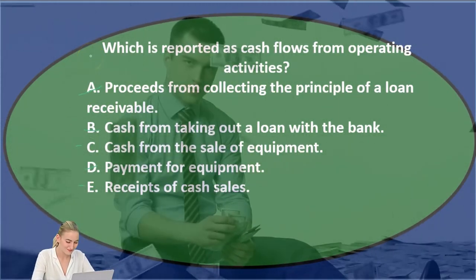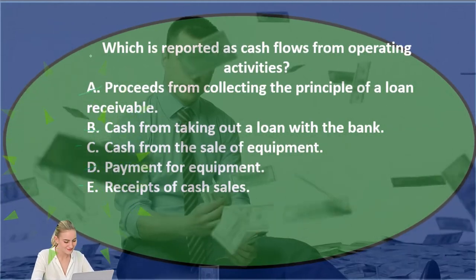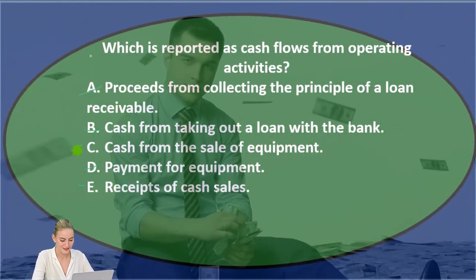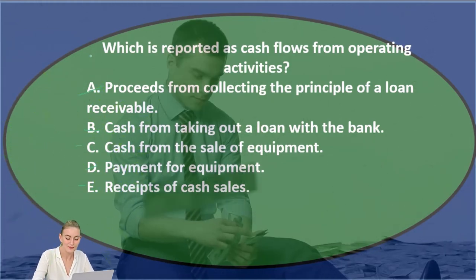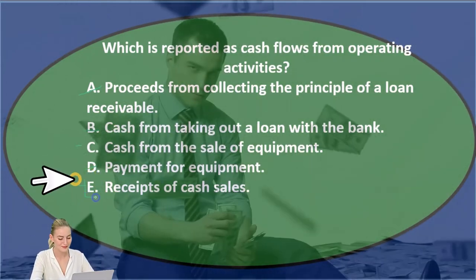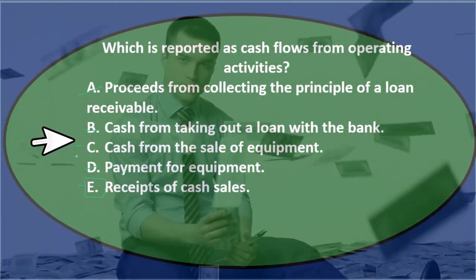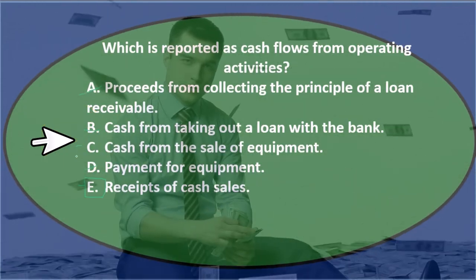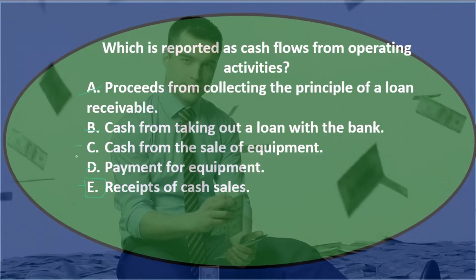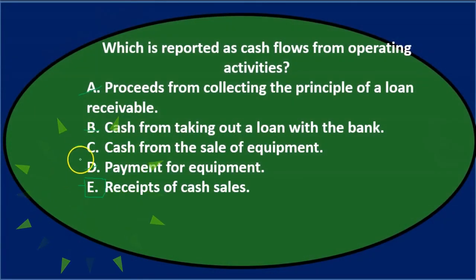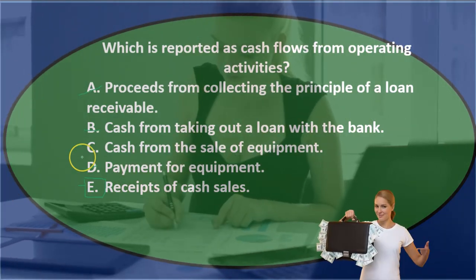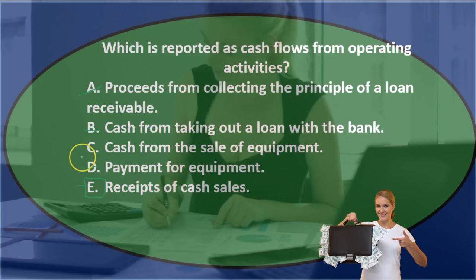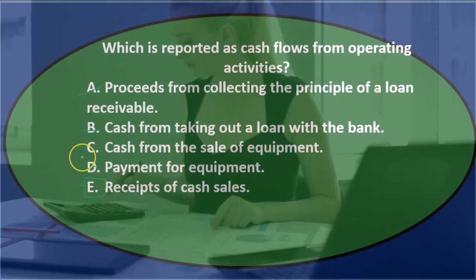Narrowing it down to C and E: cash from the sale of equipment, or receipts of cash sales. Option E seems pretty straightforward as an operating activity. For option C, we might think the gain or loss makes it operating, but E is clearly more correct. The reason the gain or loss doesn't make it operating is because it's not really the cash flow part — the cash flow is how much cash we received for the sale of the equipment, which goes in investing activities. So the answer is E — receipts of cash sales.